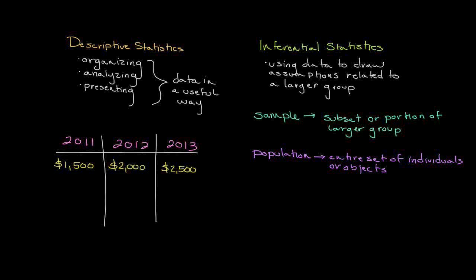The sample is that smaller group of the population, and we want to select a sample that mirrors the characteristics — demographics and such — of our population so that we can draw meaningful conclusions. You're probably asking: if there are issues with obtaining an accurate sample, which we'll talk more about over the course of this series, then why don't we just survey the entire population?